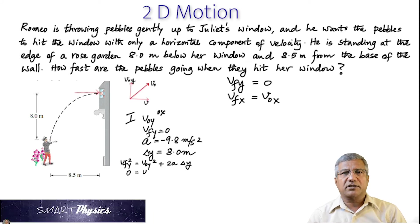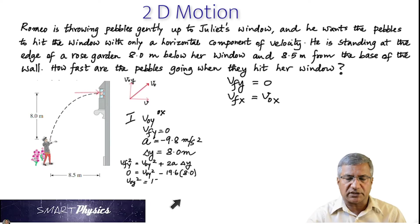We know the final velocity along the Y is 0. So that's 0. And then you have V0Y squared plus 2 times negative 9.8. Now 2 times negative 9.8 becomes negative 19.6. And then you have delta Y as 8.